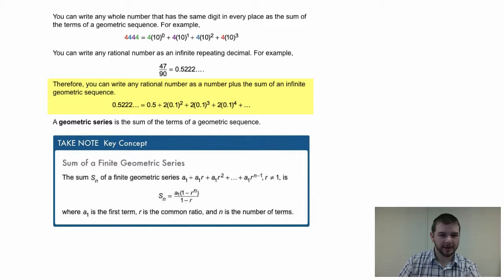The number 0.5222, indefinitely, is equivalent to 0.5 plus 2 times 1/10th squared, plus 2 times 1/10th to the 3rd power, and so on, indefinitely.